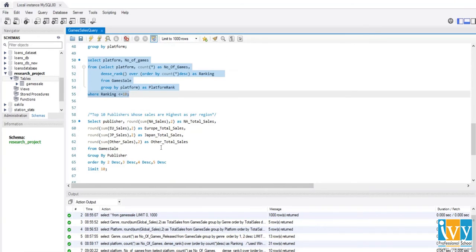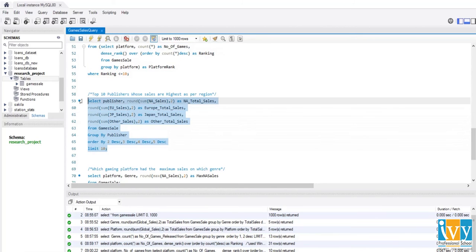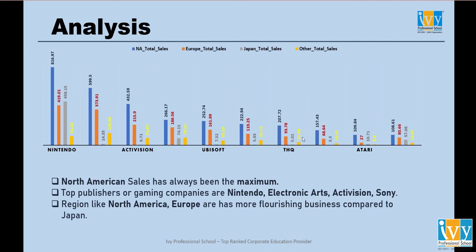Next, let's run the query for the top 10 publishers whose sales are highest per region. The output shows all four regions: North America sales, Europe sales, Japan sales, and other sales over the years. North America sales have always been the maximum. Top publishers or gaming companies are Nintendo, Electronic Arts, Activision, and Sony. Regions like North America and Europe are the most flourishing businesses compared to Japan, which shows decreasing sales over the years.